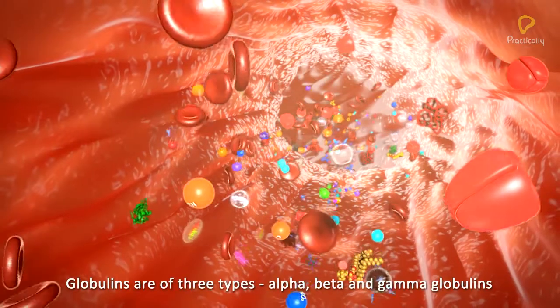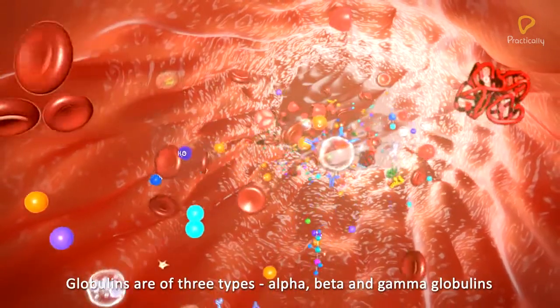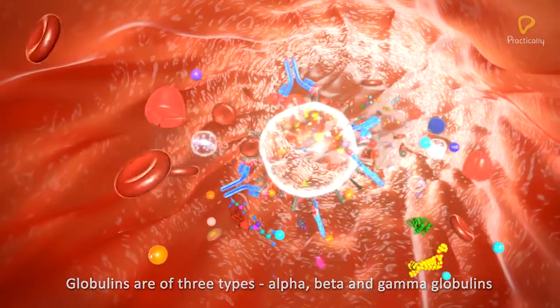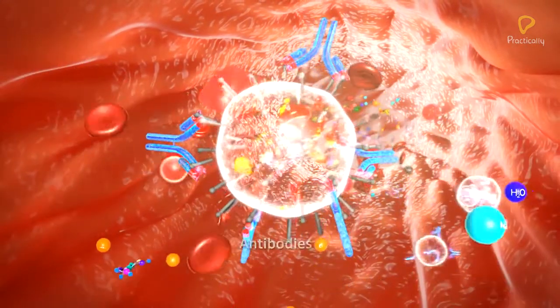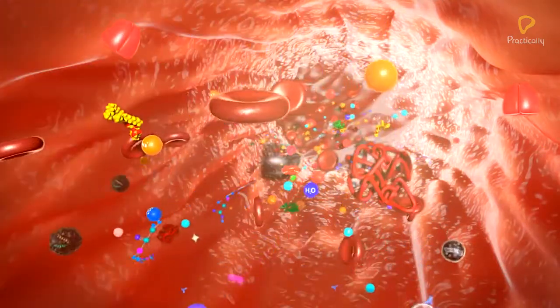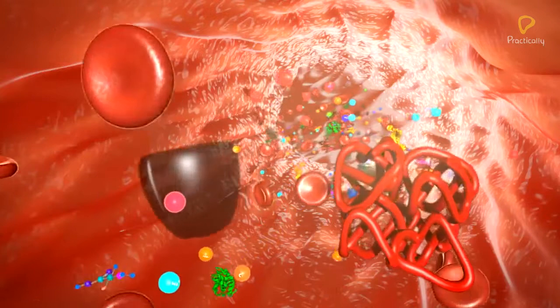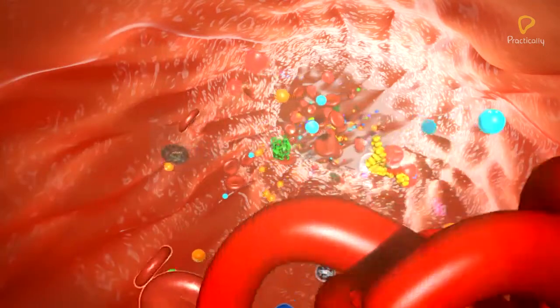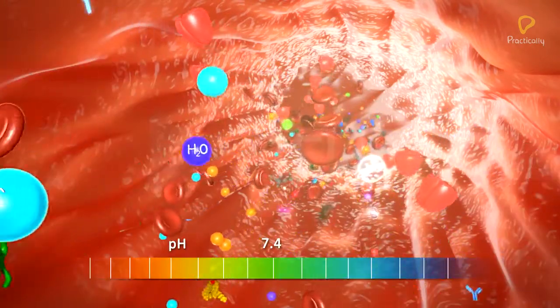Plasma globulins are of three types: alpha, beta, and gamma globulins. Gamma globulins function as antibodies, thus involved in the immune responses. Plasma proteins also act as acid-base buffers, maintaining the pH of blood.